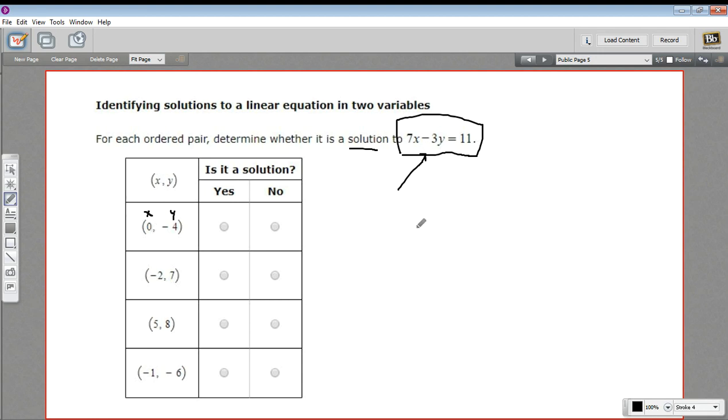Here we have x is 0. So instead of 7x, I would write 7 times 0, and then y is negative 4. So instead of 3y, I would write 3 times negative 4, and then I would still set that all equal to 11. So this thing I've just written is really this equation with 0 and negative 4 plugged in for x and y. And now we just need to do the arithmetic. 7 times 0 is easy, that's just 0. A negative 3 times a negative 4 is going to be a positive 12. So I get 12 equals 11. And 12 does not equal 11. So this is not a solution.